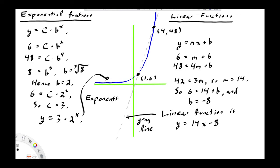Both linear and exponential functions are fairly simple in the sense that both involve two parameters. A linear function involves a slope m and a y-intercept b. An exponential function has a c parameter — which controls where the landmark point is at x = 0 — and b, which is the growth rate or decay rate if b is less than 1.